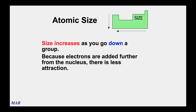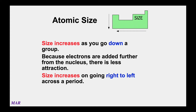The first important periodic property is the size of atoms. Size basically increases as you go left and down on the periodic table. So if someone asks which atom is bigger — sodium (11) or rubidium (37) — rubidium is lower, so rubidium is bigger. Between sodium (11) and magnesium (12), sodium is more to the left, so sodium is bigger. Size will increase as you go right to left as well, so size gets bigger going left and down.